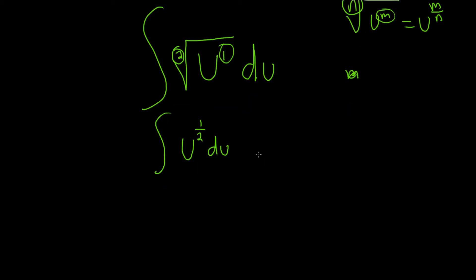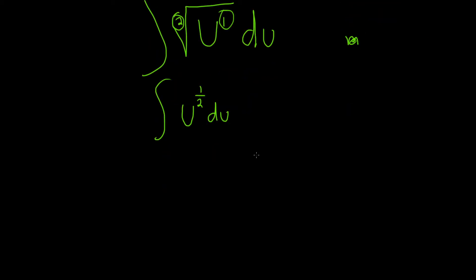Now that we have it written as u to a power, we can use the power rule. The power rule just says that we add 1 to this number. So if you take 1 half and you add 1, that's really 1 half plus 2 halves. That's going to give you 3 halves.